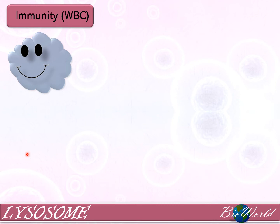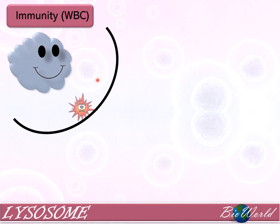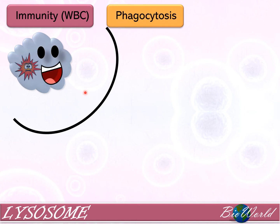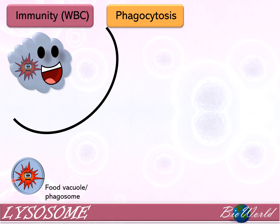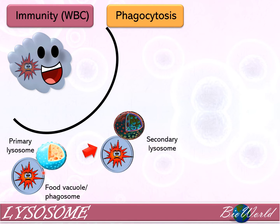Let us begin with the role of the lysosome in immunity. When a bacterium enters the system, the white blood cell will detect its presence and carry out phagocytosis. Once the bacterium is ingested by the white blood cell, it will be trapped in a food vacuole, also known as a phagosome. Then the primary lysosome will attach itself to the phagosome, which stimulates the primary lysosome to convert into a secondary lysosome.